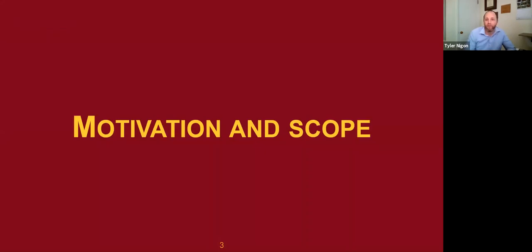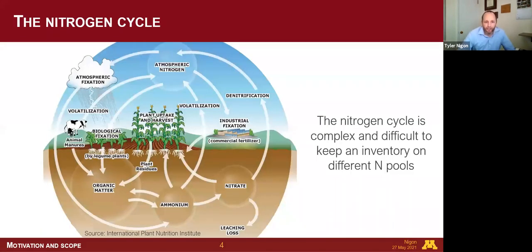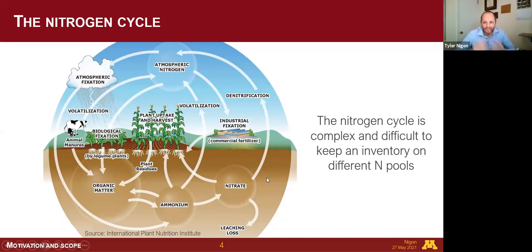I'll start off with motivation and scope for the dissertation research, beginning with the nitrogen cycle. At the center of this nitrogen cycle figure is a corn crop, and our goals are to optimize yield and minimize nitrogen loss. Those are goals that everyone can get behind. The challenge is optimizing for both because of the complexity. The nitrogen cycle is very complex — it's difficult to keep an inventory on all the different pools. Reactive nitrogen is always moving around and we're adding fertilizer.